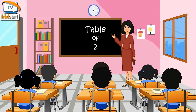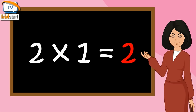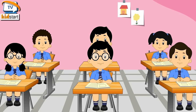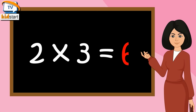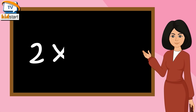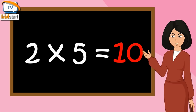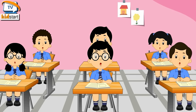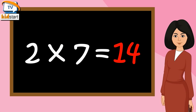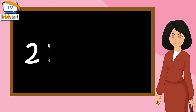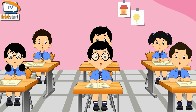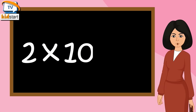Table of Two. Two sixes are twelve. Two sevens are fourteen. Two eights are sixteen. Two nines are eighteen. Two tens are twenty.